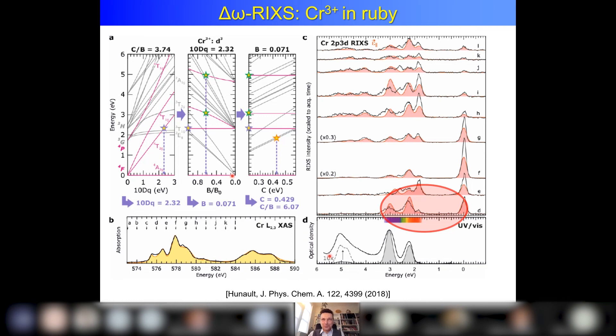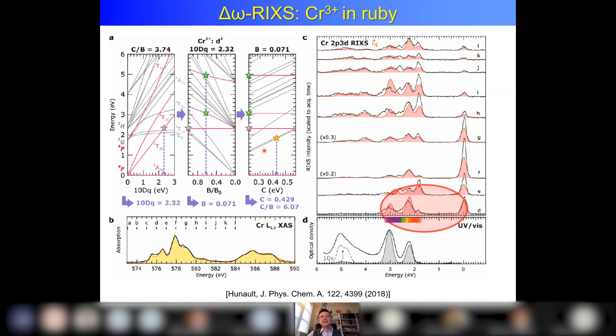The sample is ruby — a very nice red stone. Ruby is aluminum oxide with chromium 3+ impurities. We do chromium RIXS. Here is the x-ray absorption spectrum, and we did an experiment exciting every 1 eV and measuring RIXS. At excitation position D (5760 eV) the dd excitations look the same as UV-Vis — these are the spin-allowed d transitions. But if you excite to position E, one eV higher, you see that the dd excitation is now a spin-forbidden transition. This gives you options in the analysis.